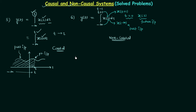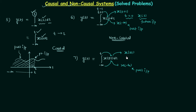Now if you change t+1 to t-1 you will find the system is causal — follow the same steps. Let's move to problem number 7. Here the output y(t) is equal to the integration from minus infinity to t of x(3τ)dτ. We substitute τ equal to t, giving x(3t), and put minus infinity in place of τ, giving x(minus infinity). Putting t=1 gives x(3), and since t=1 is the present instant, 3 is a future instant — so x(3) is a future value. The system is non-causal.